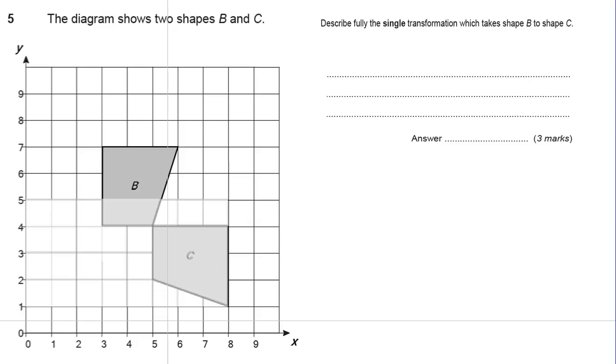Okay, question 5. It is a transformation shape. Describe fully the single transformation which takes shape B onto shape C. Now, with transformations, this is just a one-off question so there's no sort of clues to what it could be.